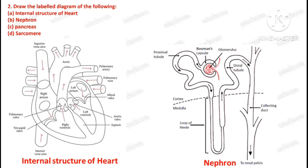Question number two: draw the labeled diagram of the following — internal structure of heart, nephron, pancreas, and sarcomere.